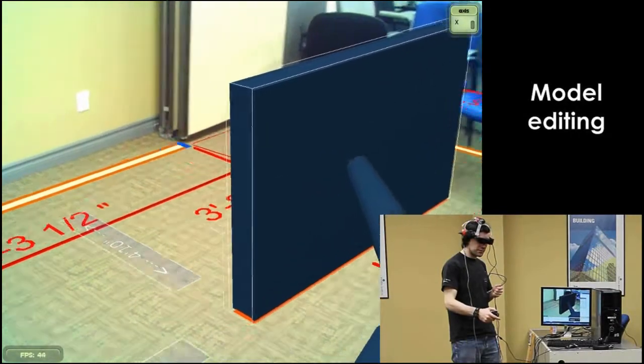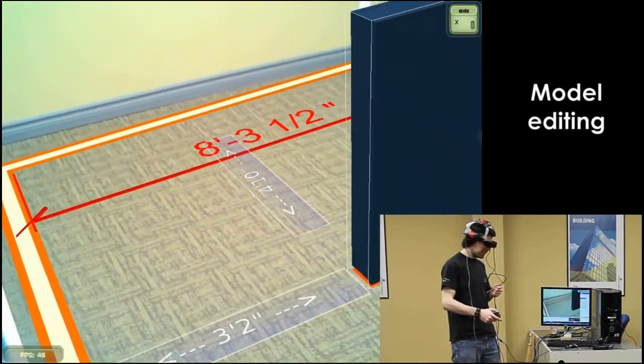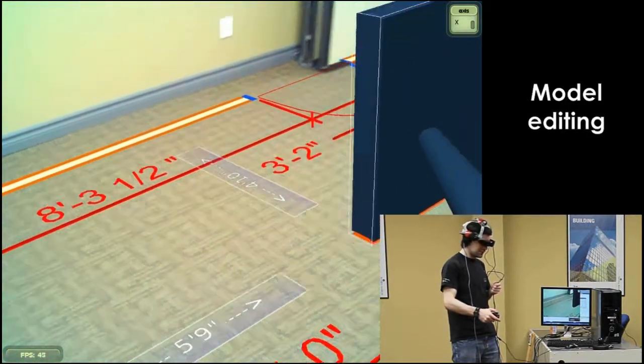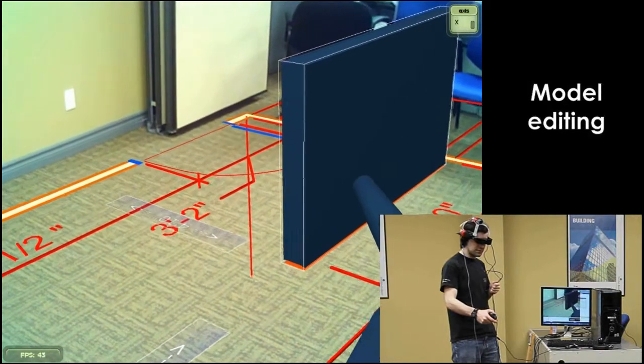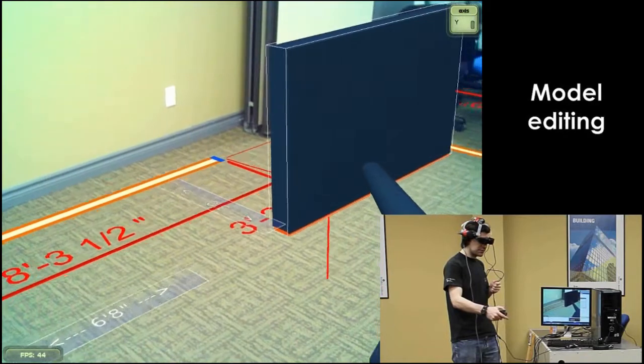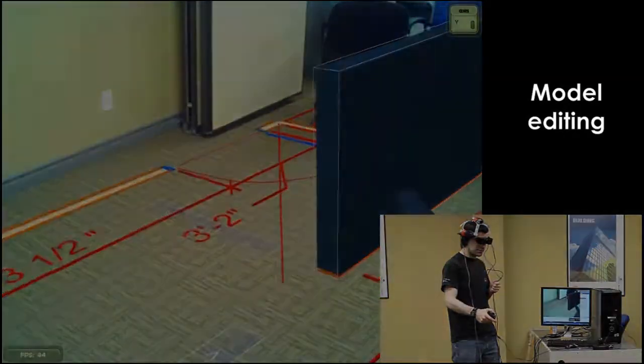In a design review session, builders and designers could also meet in this augmented environment to explore possibilities that cannot be drawn easily on paper. Modifying the location of walls or their dimensions directly into the physical environment could lead to a better understanding of the model.